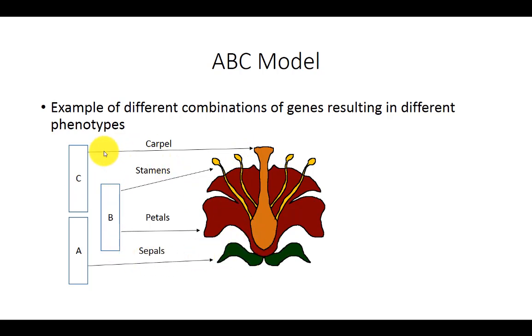So if you have the C transcription factor on its own, you get carpels. If you have B and C together, you get stamens. If you have B and A together, you get petals. And if you have A on its own, you get sepals. So these three transcription factors are responsible for determination of what flowering structures you get.